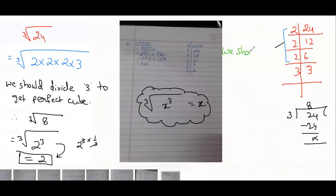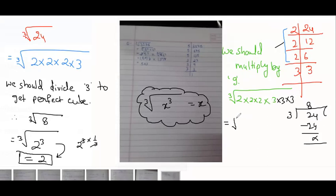So what should I write? We should multiply by 9. So what will happen? 2×2×2 was already there, 3 was already there, then I will multiply it by 3, multiply it by 3. Then I know 2 power 3, 3 power 3, 2 power 3 is 2, 3 power 3 is 3. Answer will be 6. Is it making sense?